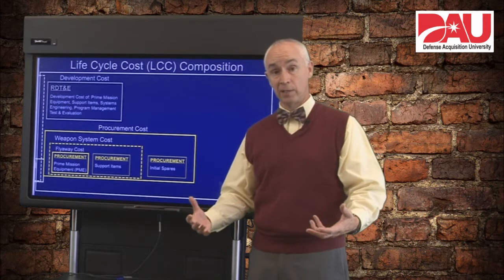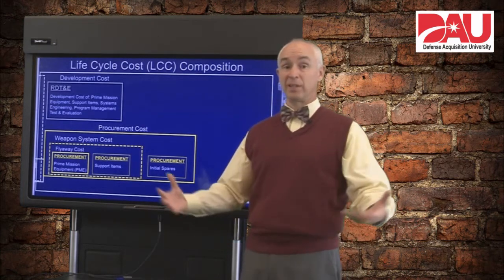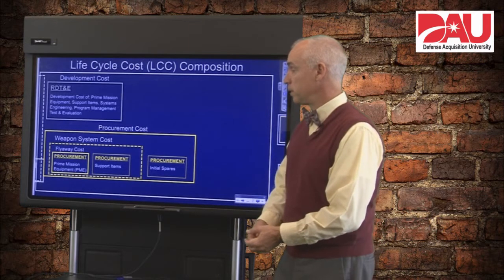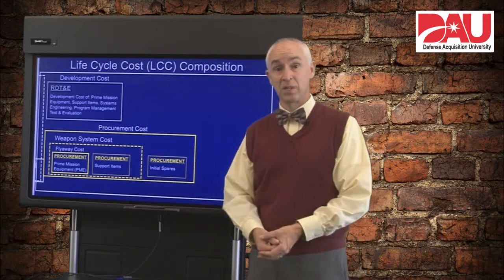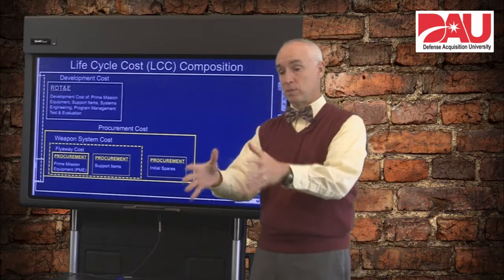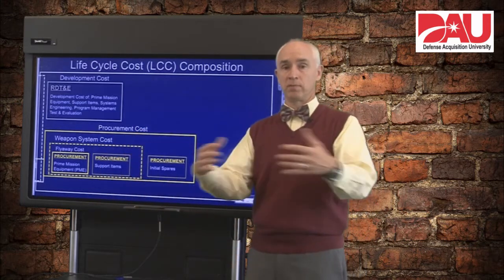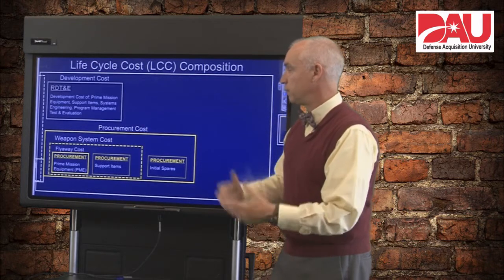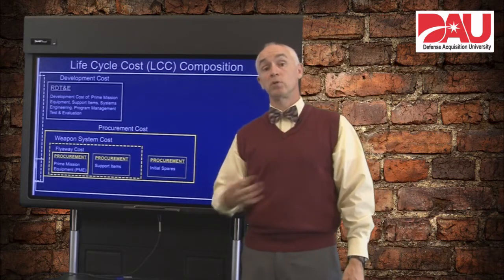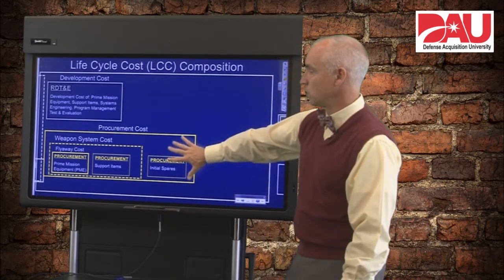So what are those support items? That would be things like your test stands, all of your maintenance gear, generators you have to start an aircraft up, training devices — all of those go into that bucket of support items. All of that together, with all of its support equipment around it, is the weapon system cost. And then to finish off procurement costs, you also have to buy your initial set of spares, which is also bought with the procurement appropriation. So that's all your procurement costs.